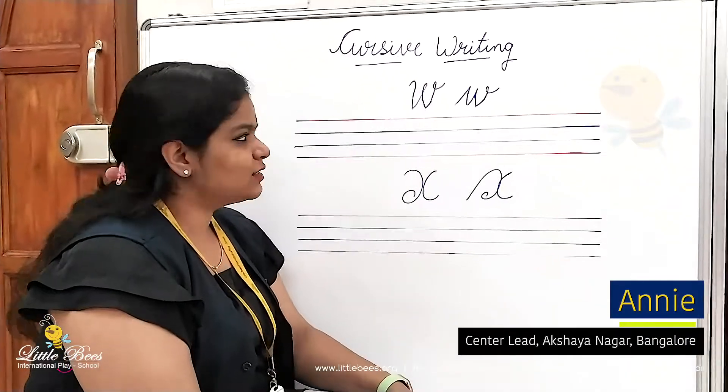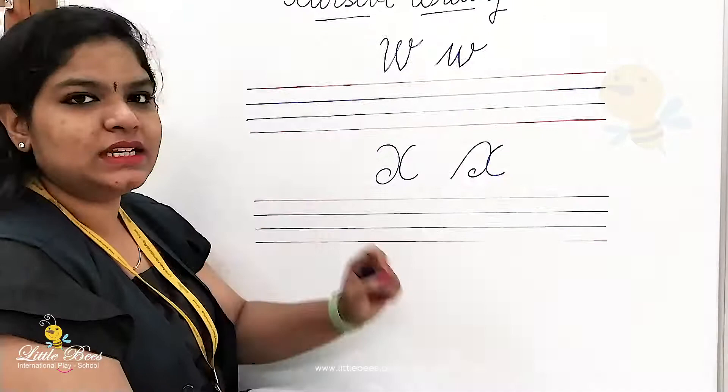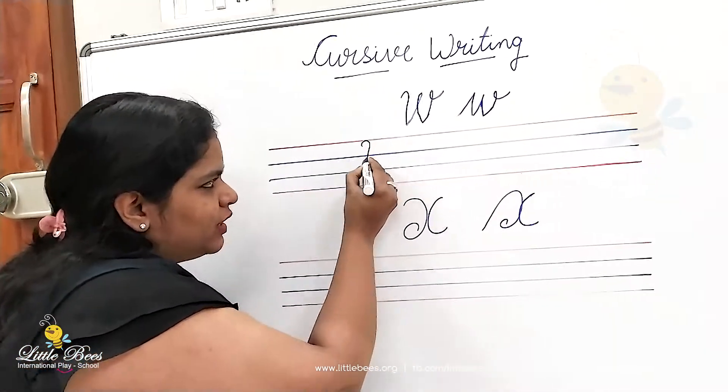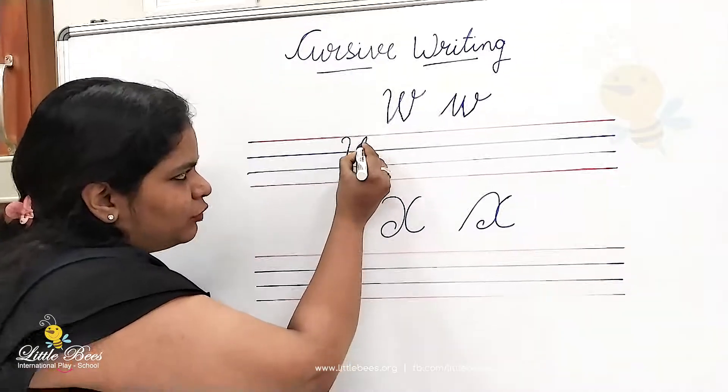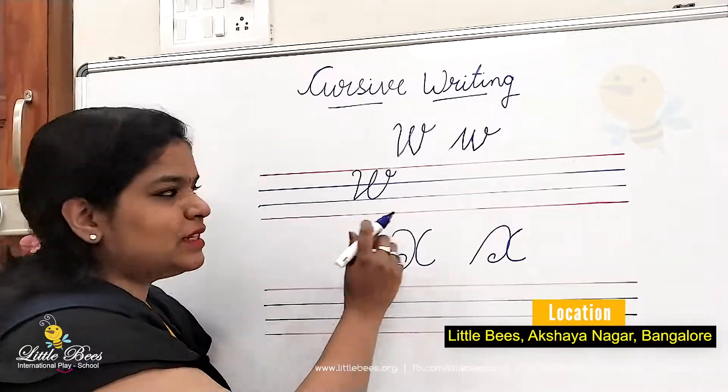Okay, so let's start. First we will see how to write cursive writing capital W. Just a small curve and the same way how you write W. This is capital W.